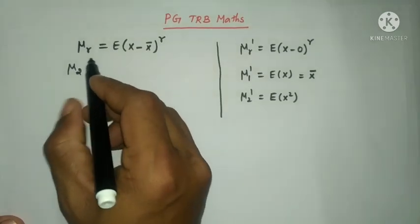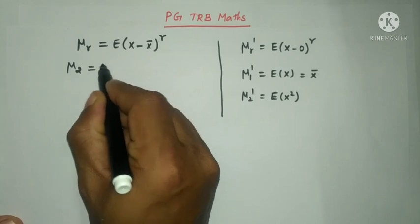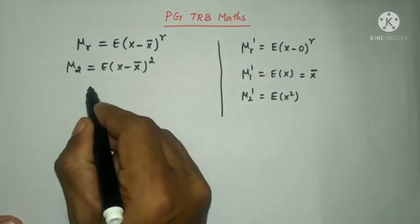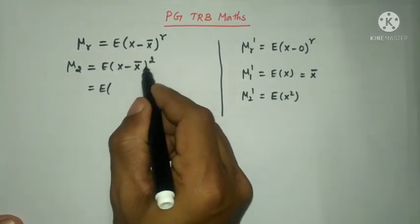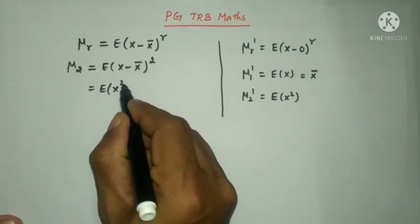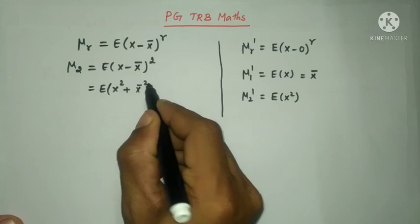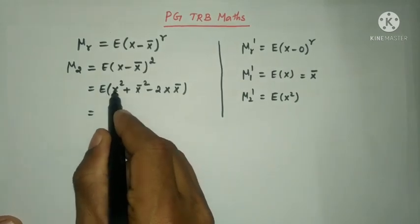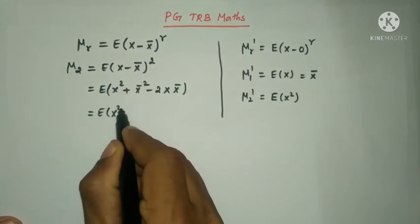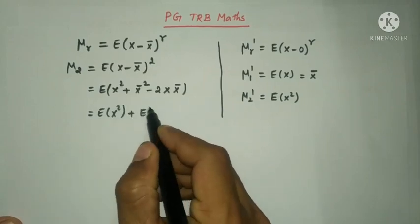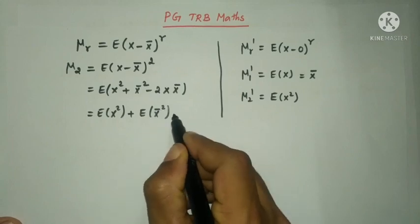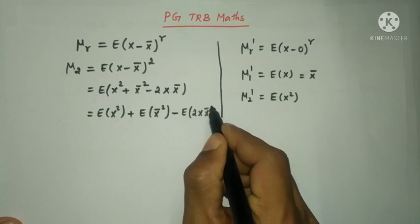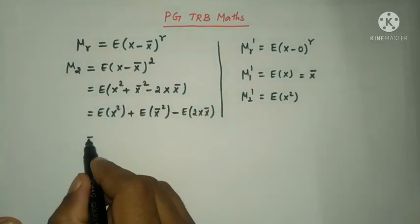μ₂ is equal to E[(X - X̄)²]. Expanding this: E[X² - 2X·X̄ + X̄²], which gives E[X²] - 2·X̄·E[X] + X̄² (since X̄ is a constant).